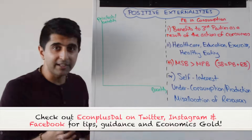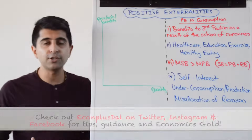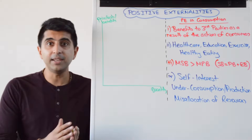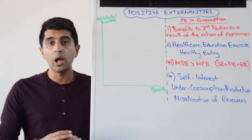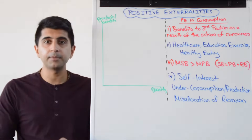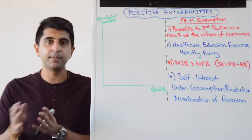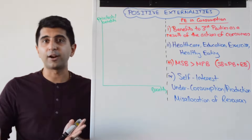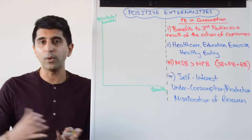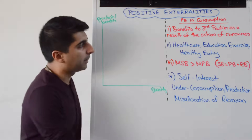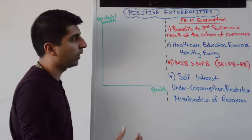Education has got significant third party benefits. So individuals get educated well; the third party could be the rest of society that benefits because individuals, if they're well educated, will be more productive. They'll earn higher incomes, they'll pay more tax to the government, and that revenue can then be used to provide socially desirable things like infrastructure, roads, hospitals, schools, and welfare. So the third party could be the rest of society if individuals are educated well.